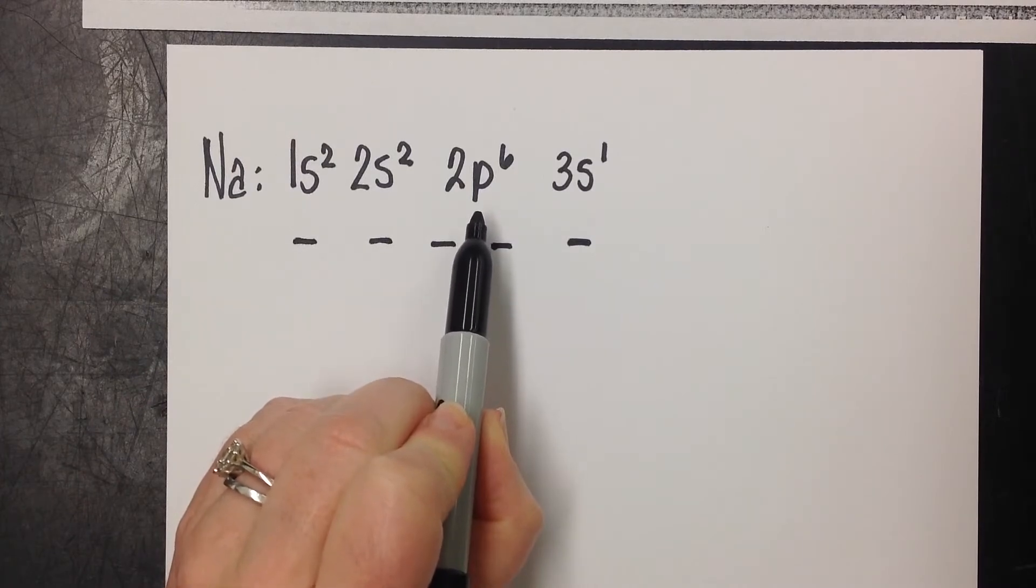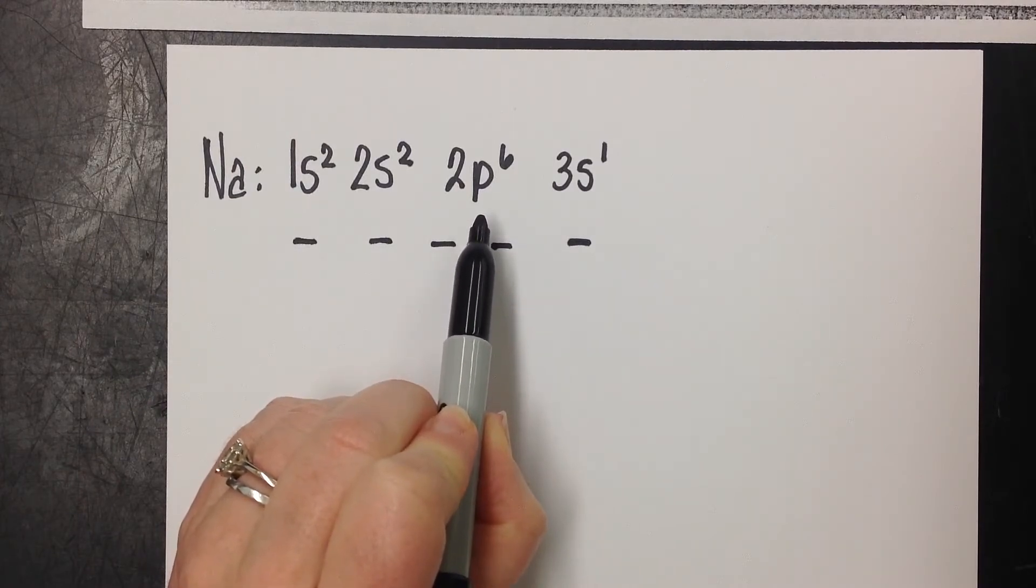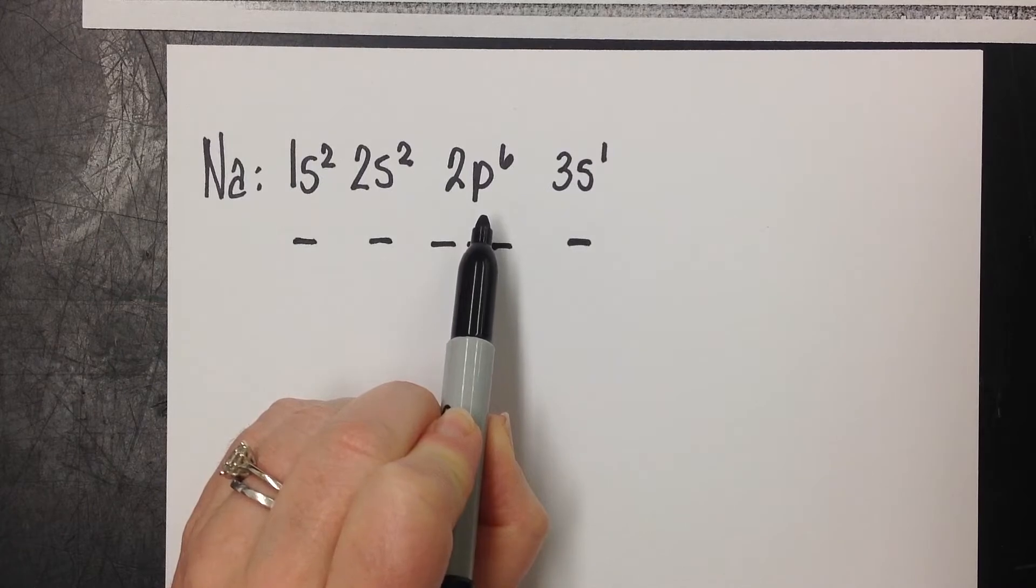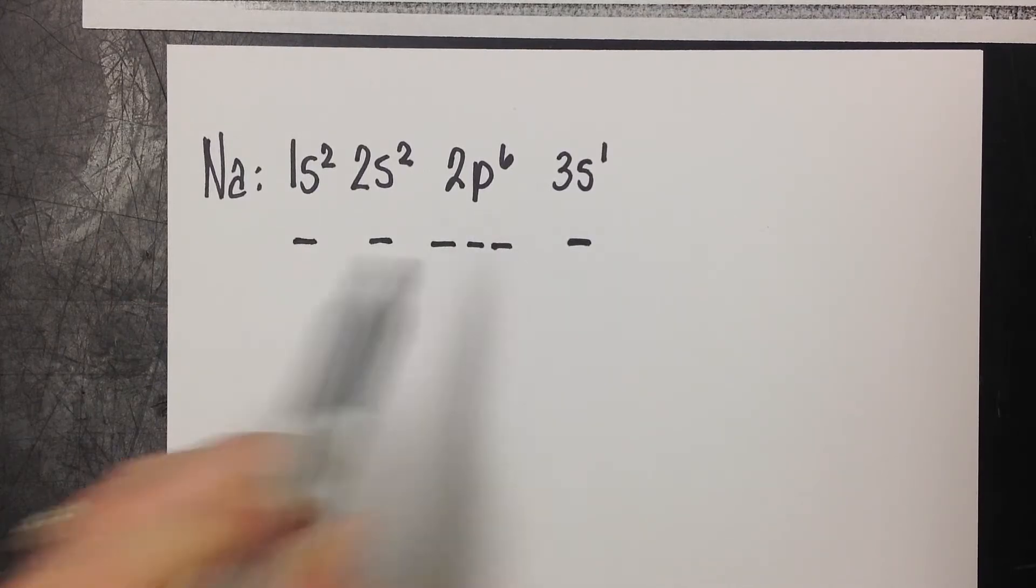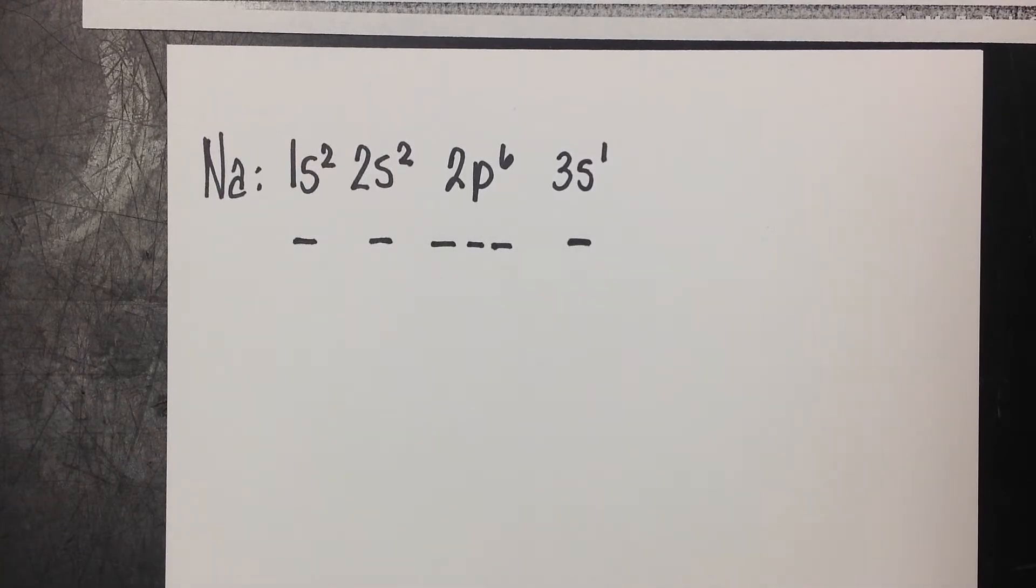The P sublevel or subshell actually has three orbitals. So we're going to put three little parking spots. The reason for this is the S orbital can hold a maximum of two electrons. And if you can put two electrons in one spot, you only need one spot. The P orbital or the P subshell has six electrons. If you can put two electrons in a spot, then you're only going to need three spots.